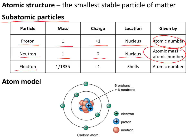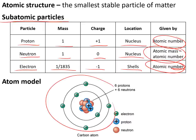Electrons have a mass of 1/1835, a charge of minus 1, and are found in shells around the nucleus. They are also given by the atomic number. Here we can see that structure with the nucleus in the middle and the electrons in shells around it.